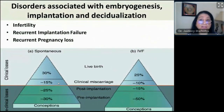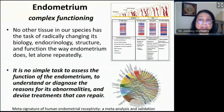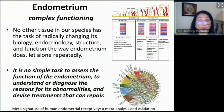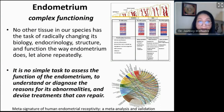Disorders of embryogenesis and decidualization actually lead to infertility, recurrent implantation failure, and recurrent pregnancy loss. Consider how any structure in our body radically changes its biology, endocrinology, structure, and function — not once, but every month after month. To study such a structure and assess its functions is also not easy because there are so many things happening at the same time.